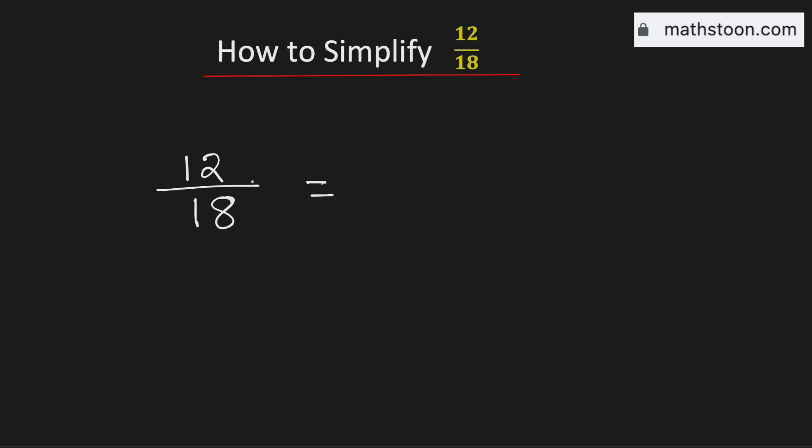We know that both are even numbers, therefore to simplify it we need to divide them by 2. And by doing so we will get 6 in the numerator and 9 in the denominator.